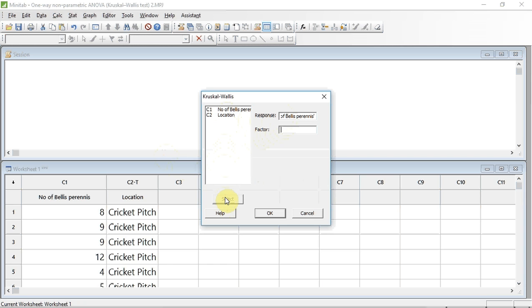Now I need to tell it the factor that I'm going to divide my main data up with. In this case it's C2, location. I'm going to select it, press select and it's entered into the factor box. I'm now going to press OK.